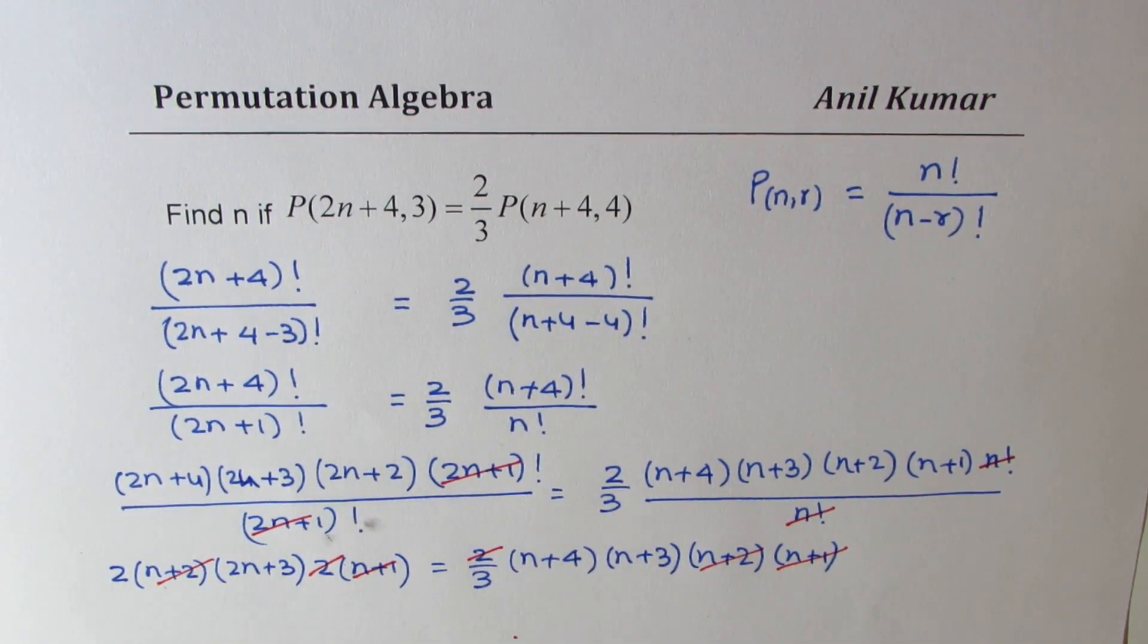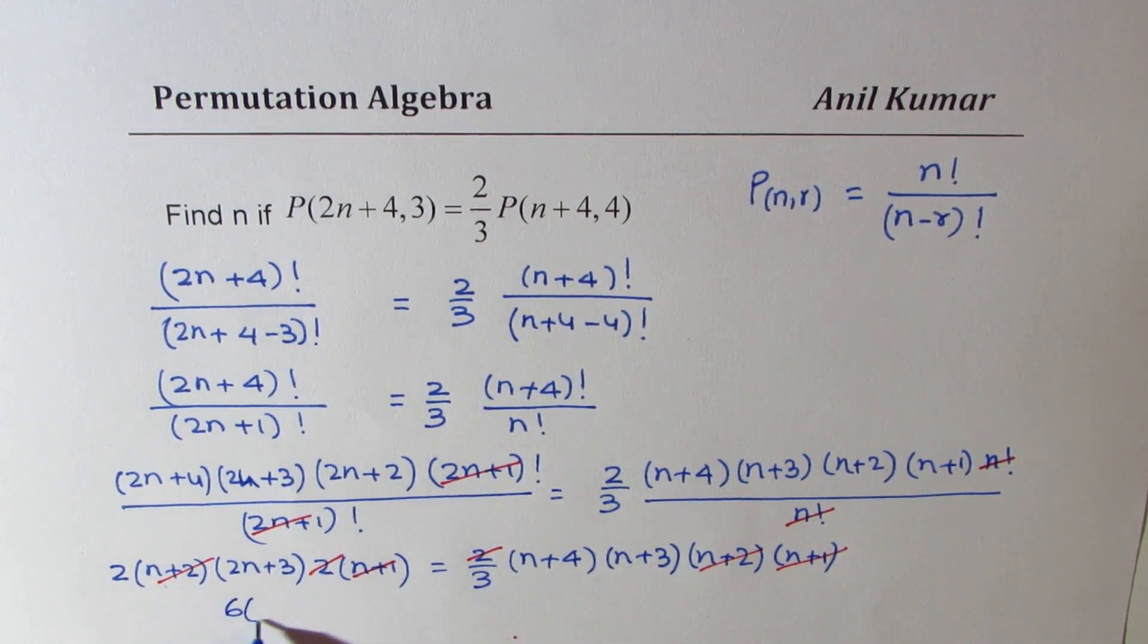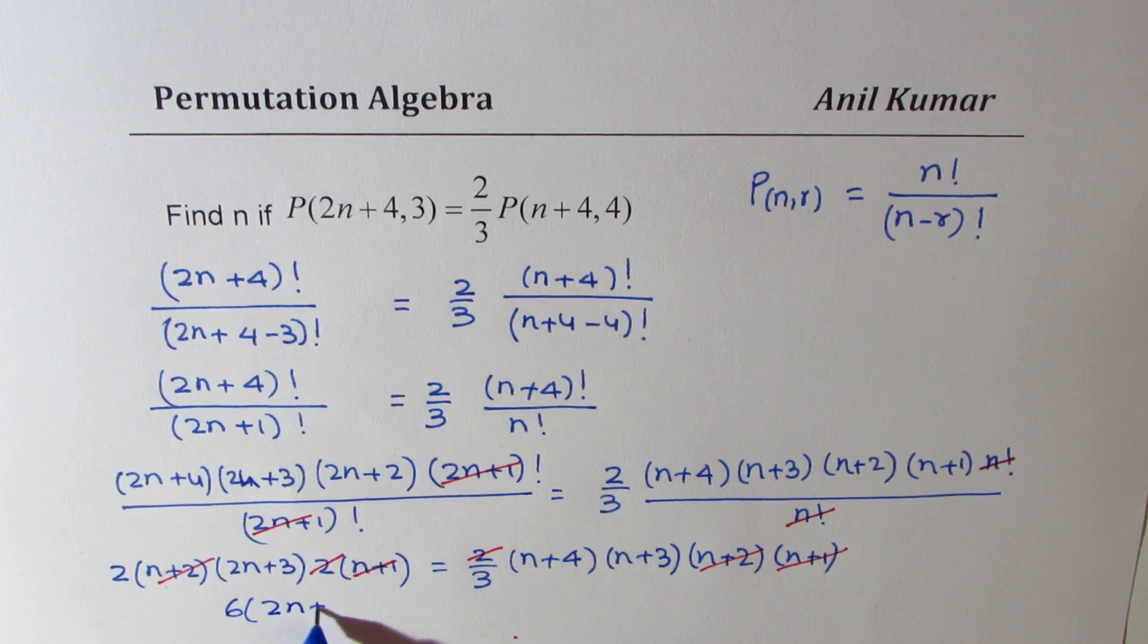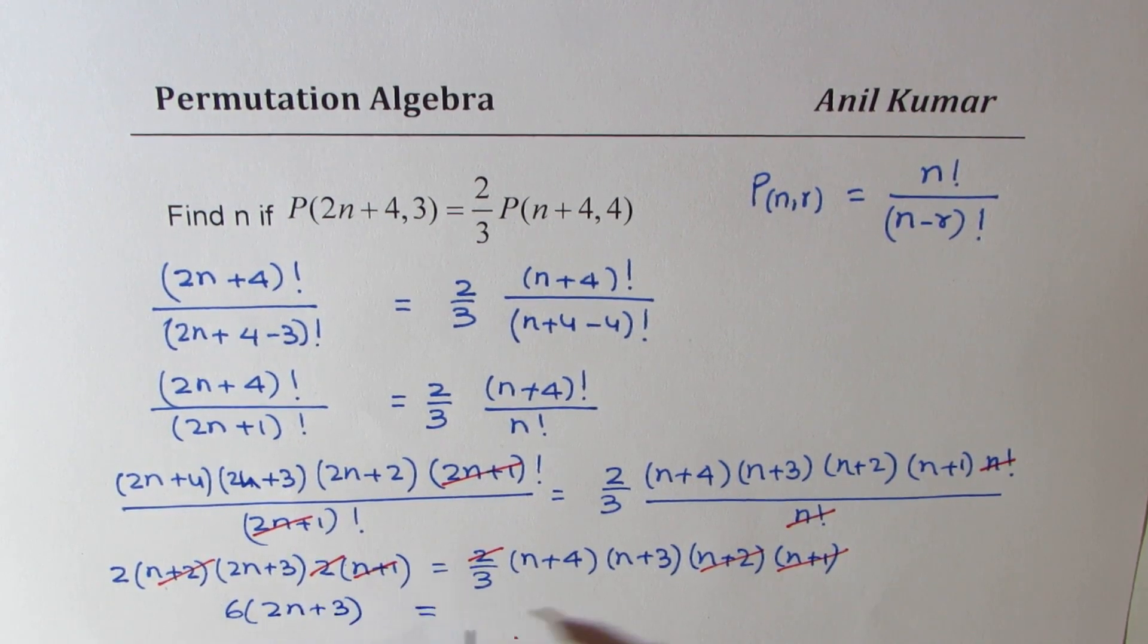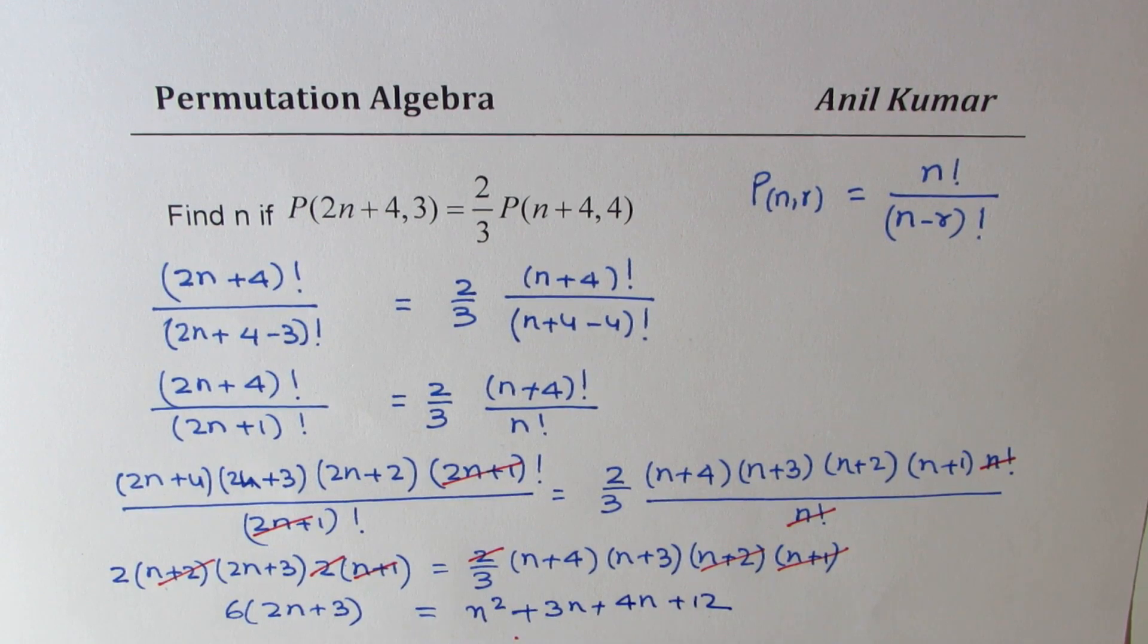Now we'll cross-multiply, multiply 3 by 2, so we get 6 times (2n+3). And on the right side, we have (n+4) times (n+3). So let me expand this. We get n squared plus 3n plus 4n plus 12.